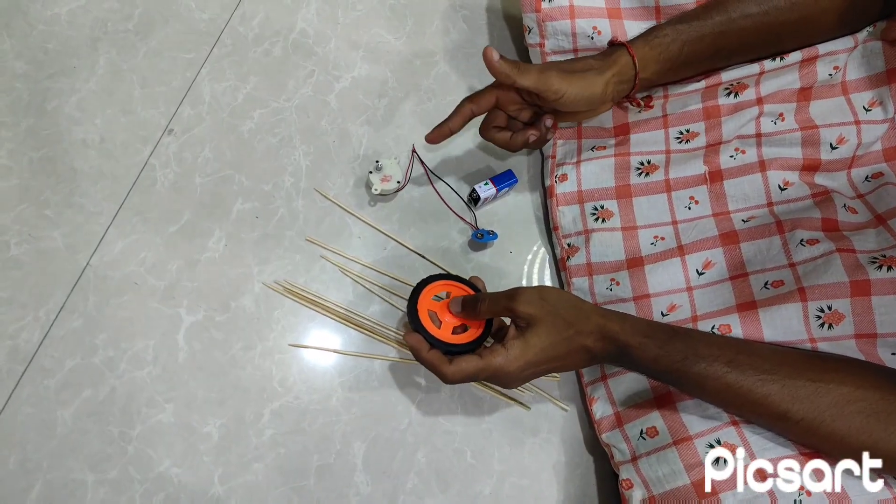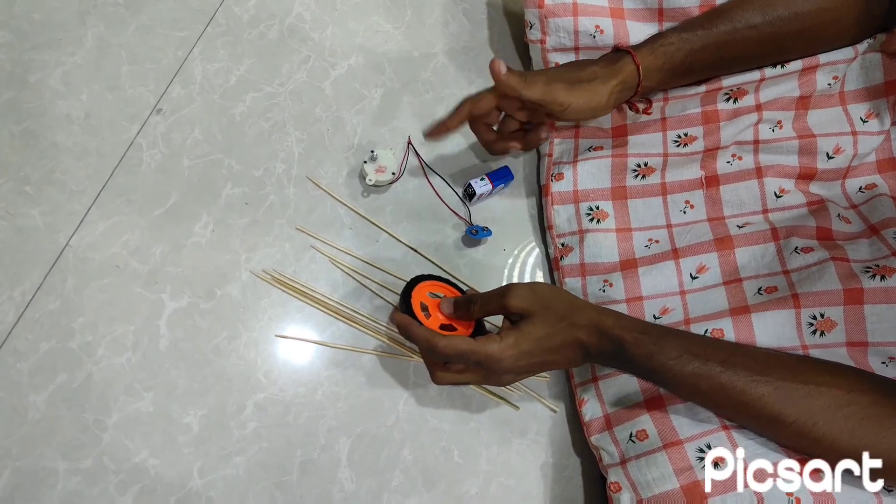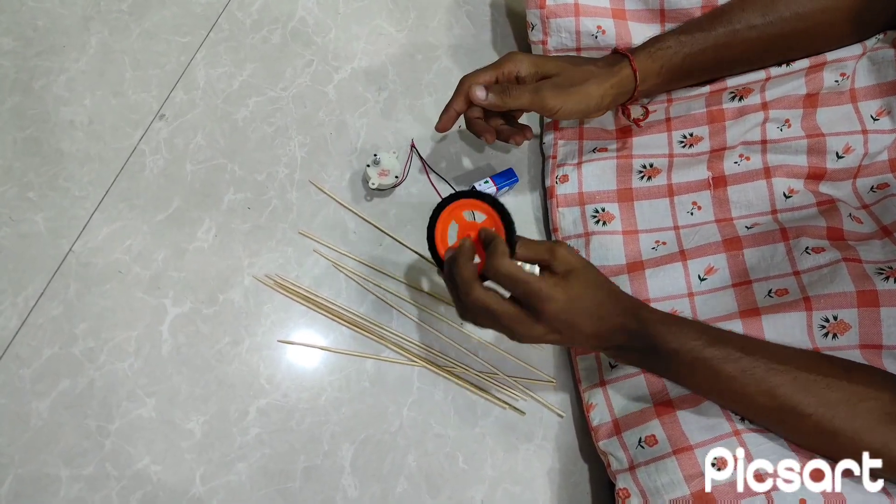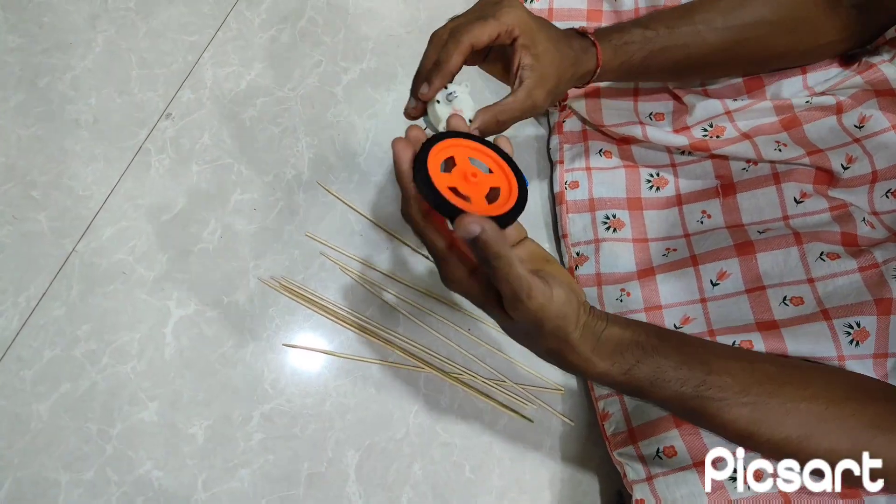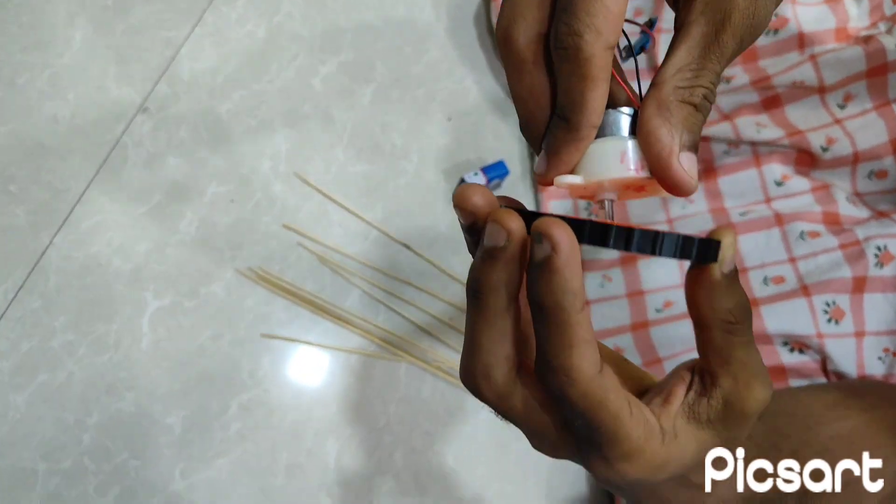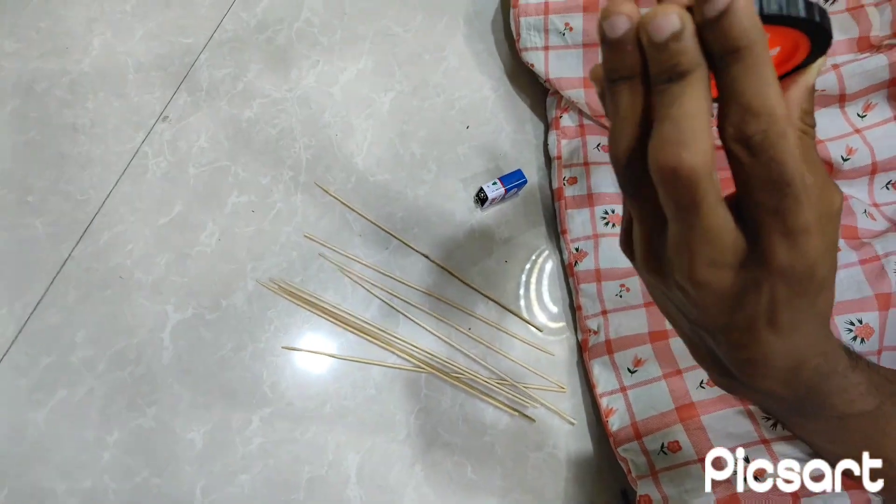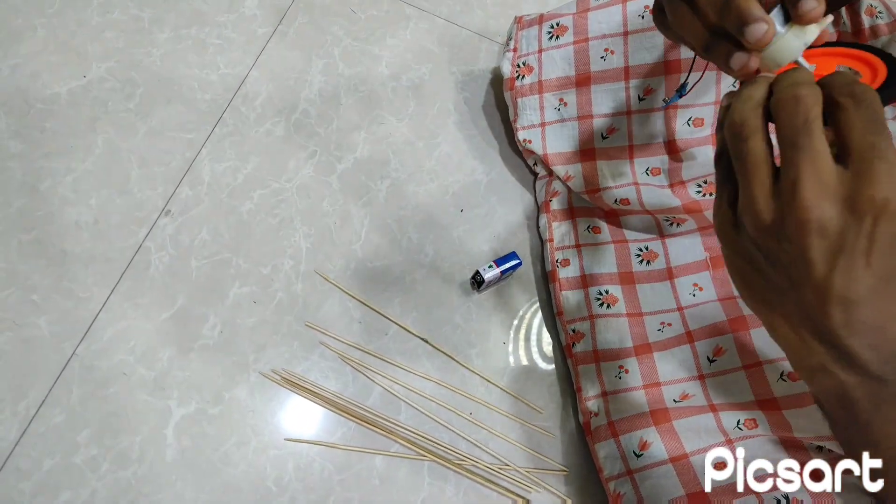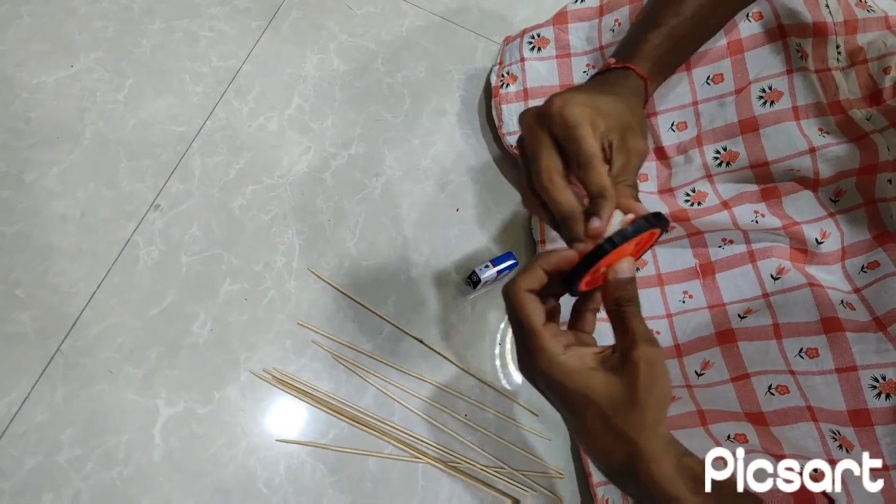Now we have checked the motor is connected successfully from the battery. Now we have removed the battery. Now let's connect the tire first. It connects directly, you can see here. Let's press tightly so you can connect easily. It's connected.